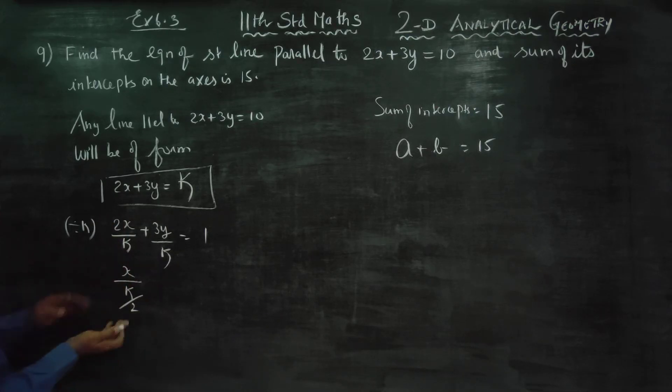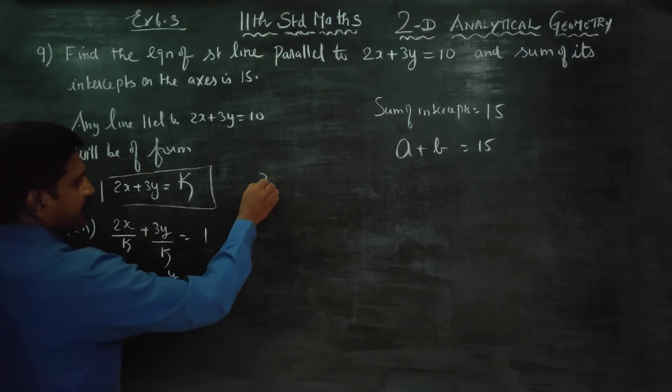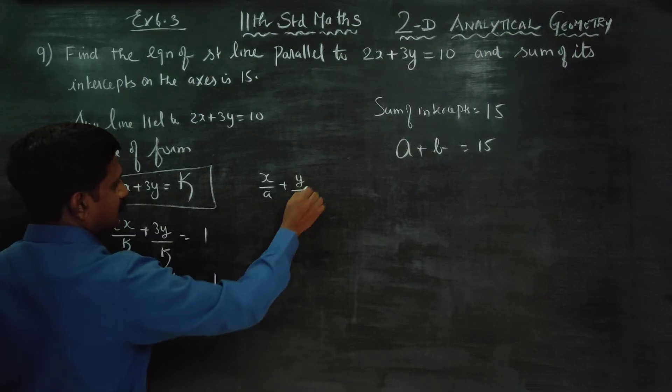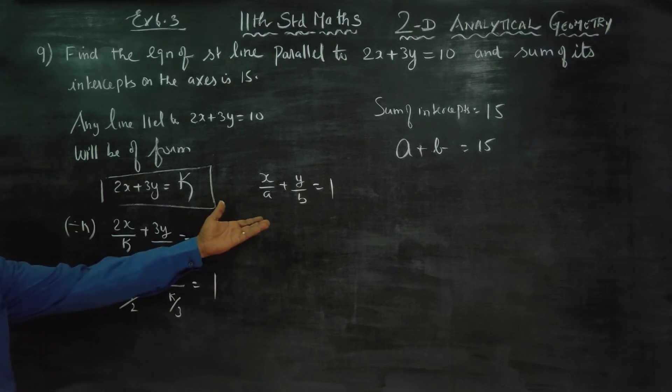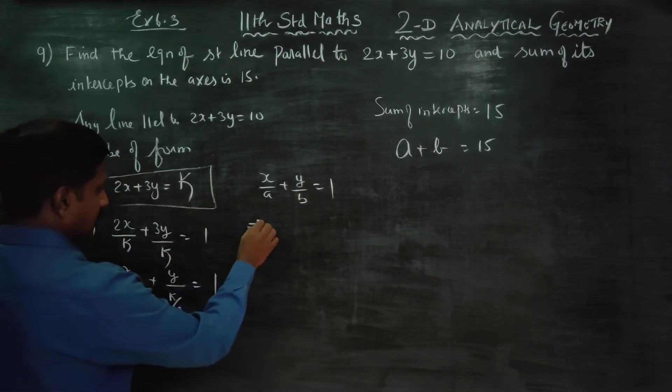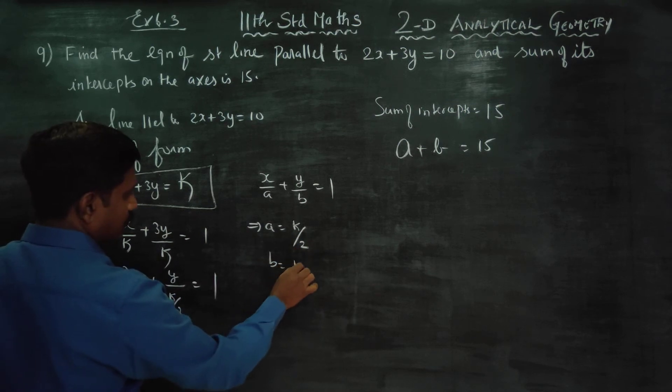Taking reciprocals: x by k/2 plus y by k/3 equals 1. Then it matches with x by a plus y by b equals 1, the intercept formula. This implies a equals k by 2 and b equals k by 3.